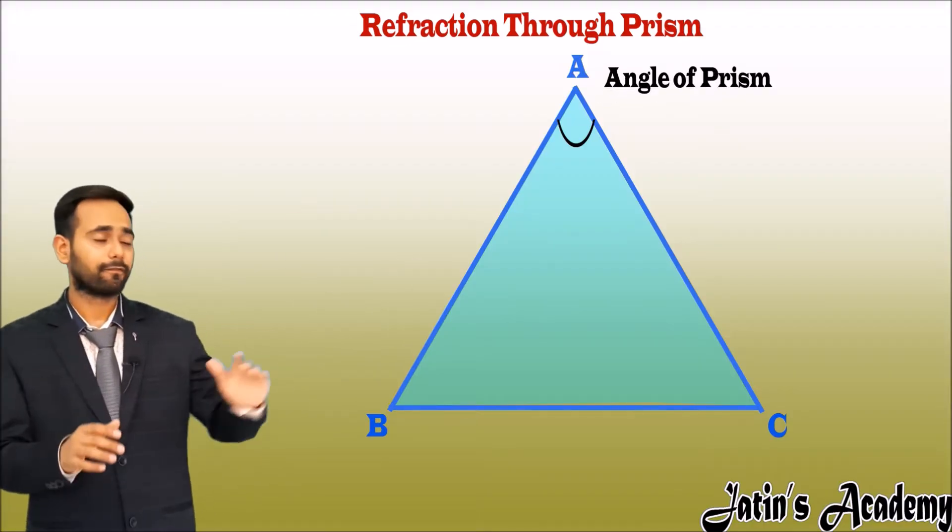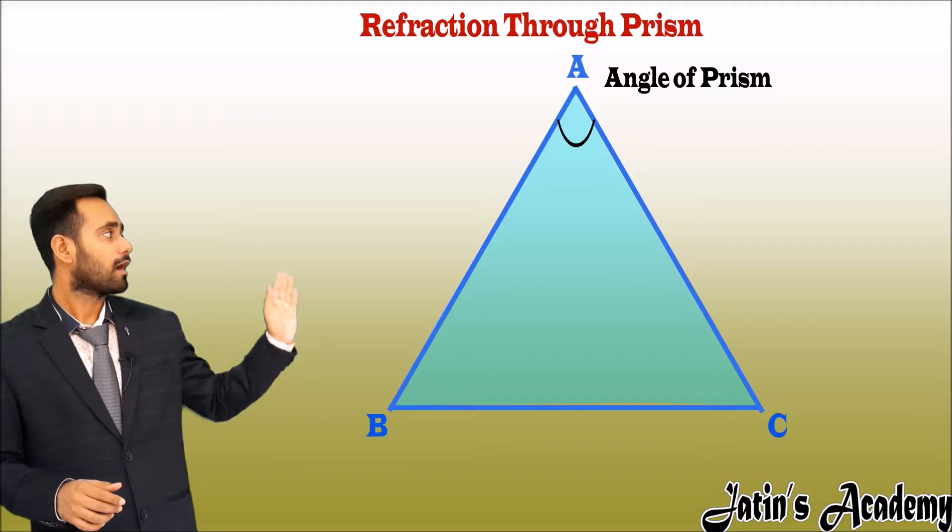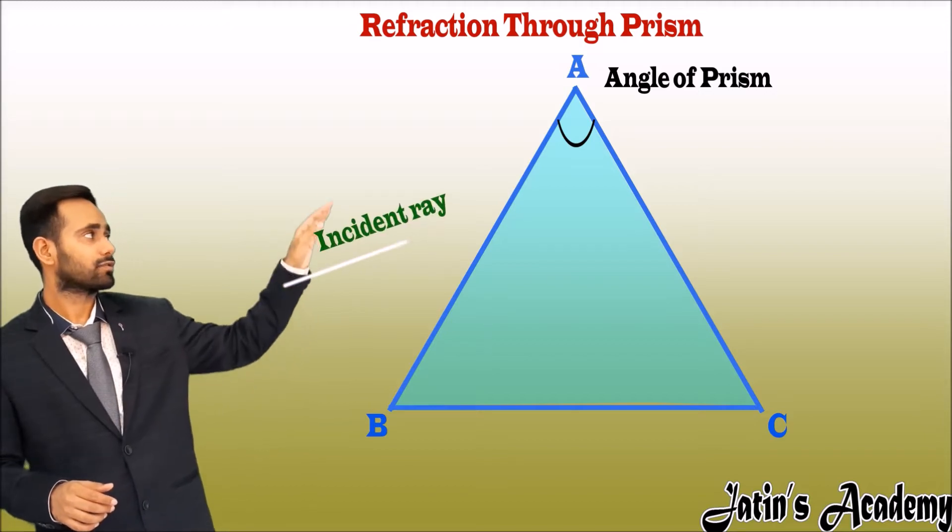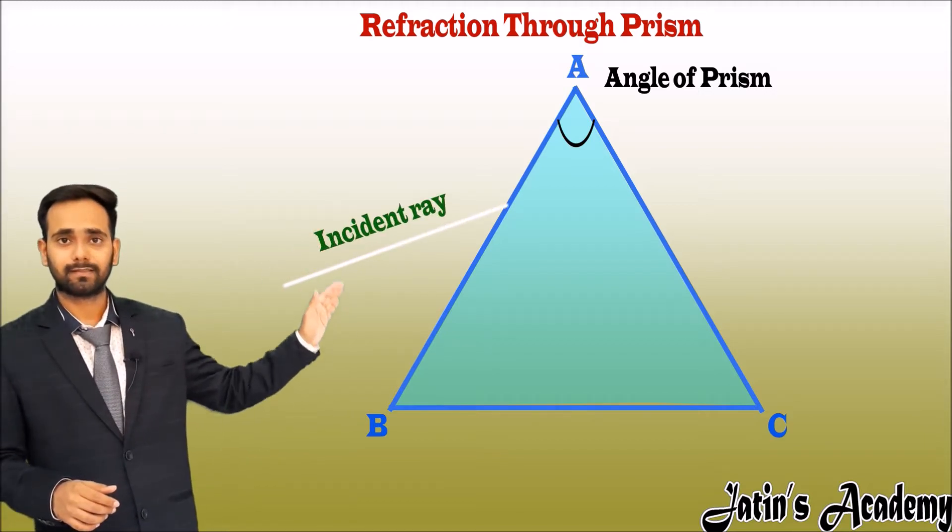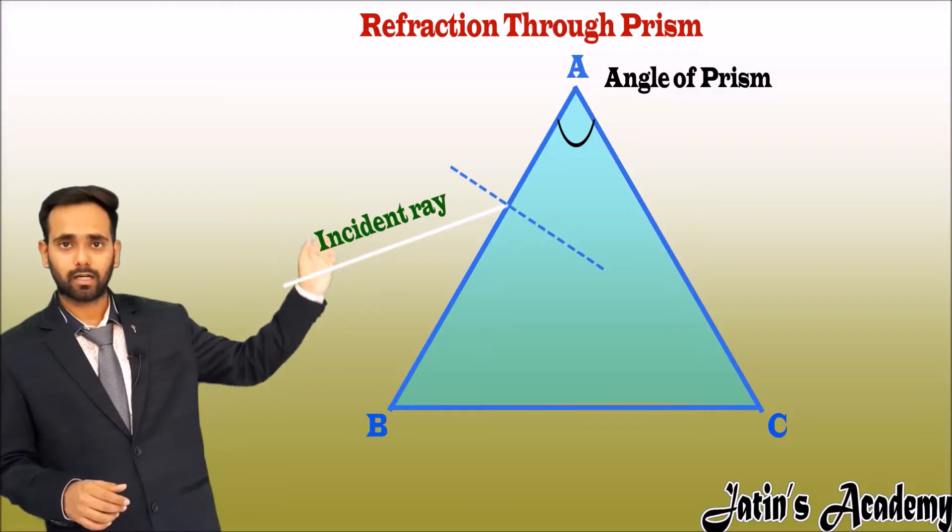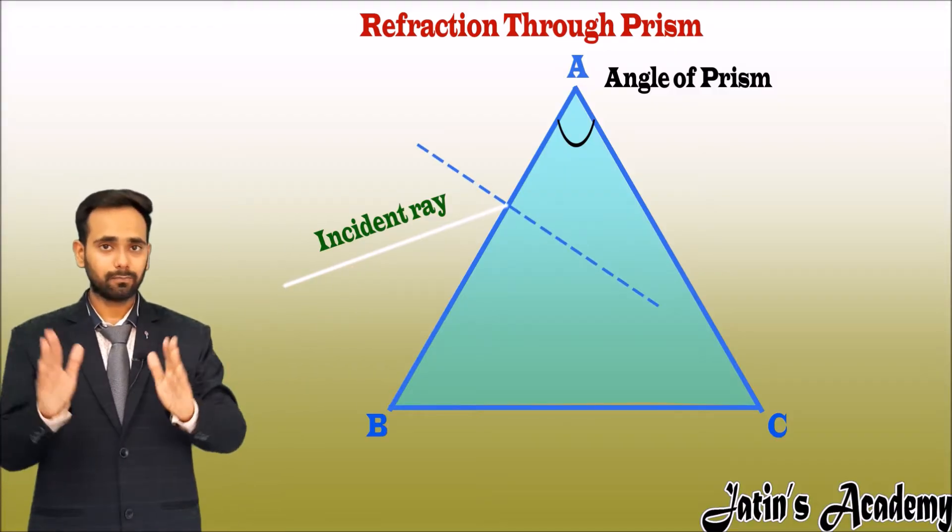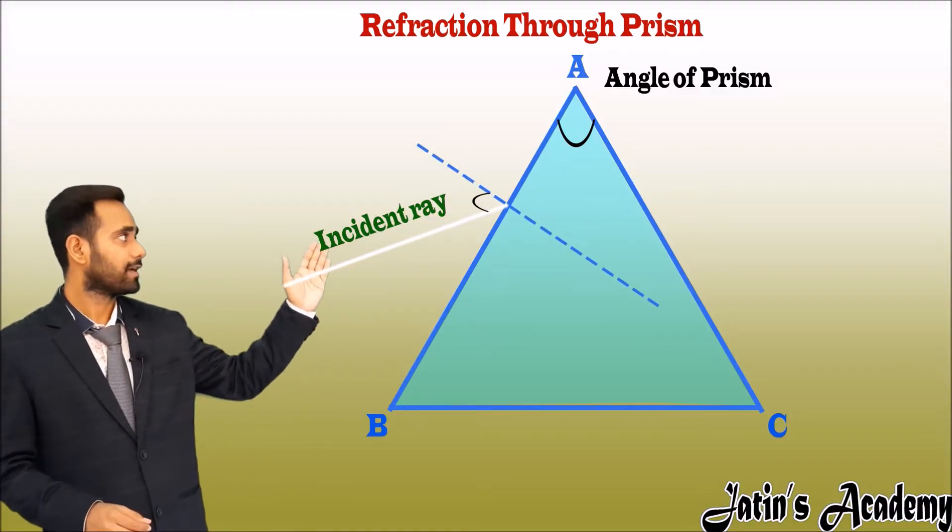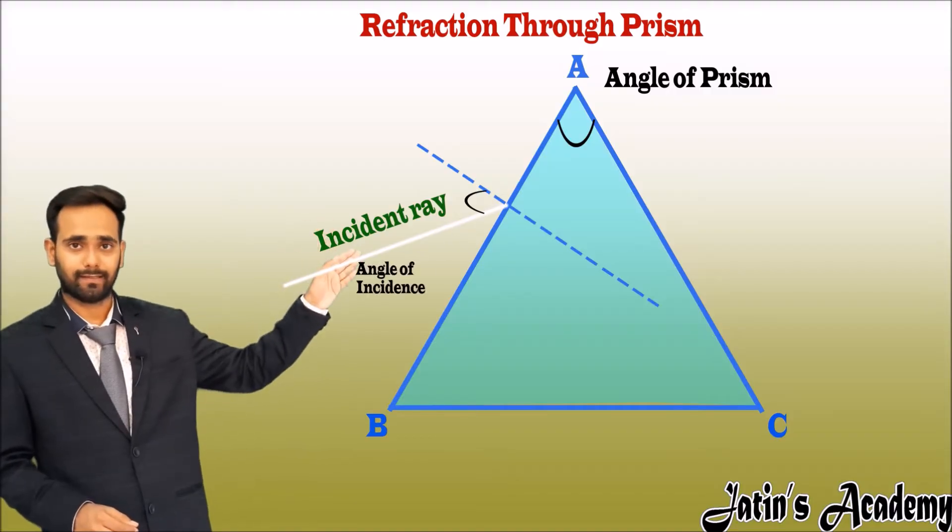Now incident ray from the left hand side. The incident ray striking on the AB surface at this point, make a normal and the angle between the incident ray and the normal is angle of incidence.